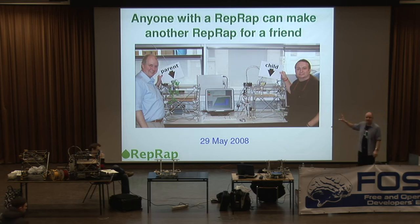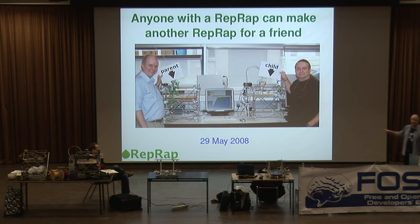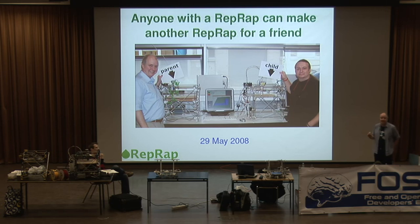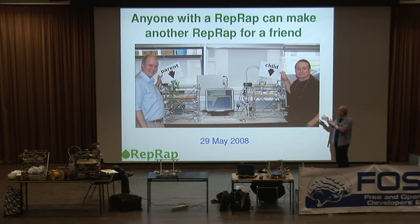This is actually the very first time the machine copied itself. That's me on the left with a slightly projecting stomach and the balding head. The chap on the right with the ponytail is Vic Oliver, another one of the guys on the core team from New Zealand. The machine on the left is the first machine we made — version one. There was no RepRap machine to make its parts, so we made them on a commercial 3D printer. That machine on the left made the parts for the machine on the right, and that child machine made its first grandchild part on the 29th of May 2008.